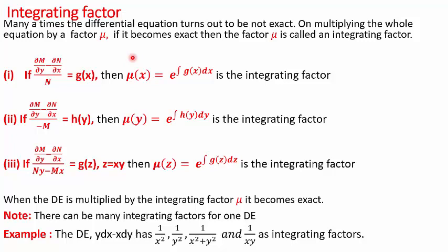Let us say we are given a differential equation M dx + N dy = 0. The first thing we do is find whether the differential equation is exact or not. For that, we find the partial derivatives del M by del y and del N by del x. If they are equal, the equation is exact and we solve it using the method from Part 1. But if del M by del y and del N by del x are not equal, we find their difference.